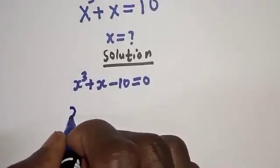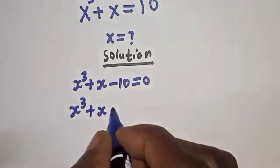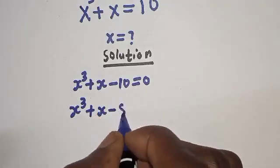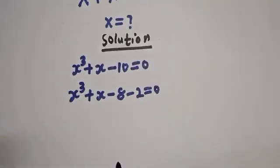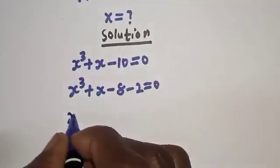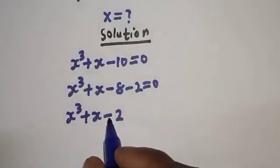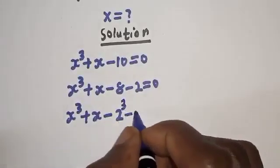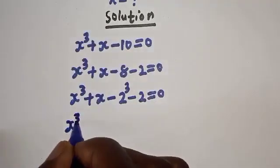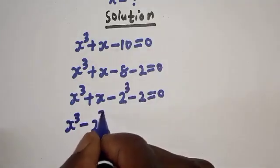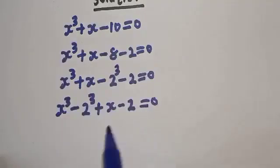Then s raised to power 3 plus s minus 10 can be written as s raised to power 3 minus 2 raised to power 3, plus s minus 2, is equal to 0.